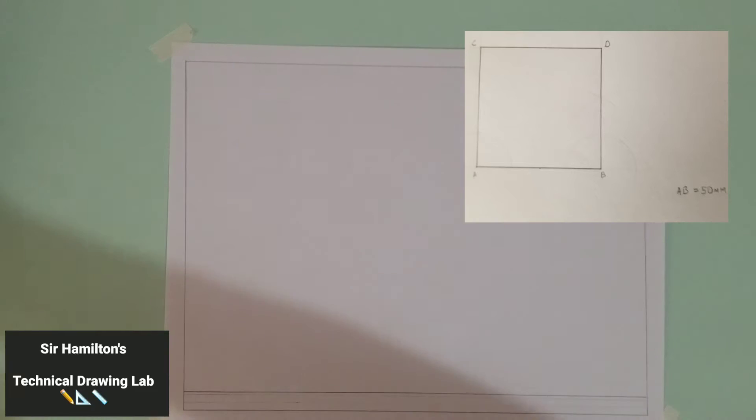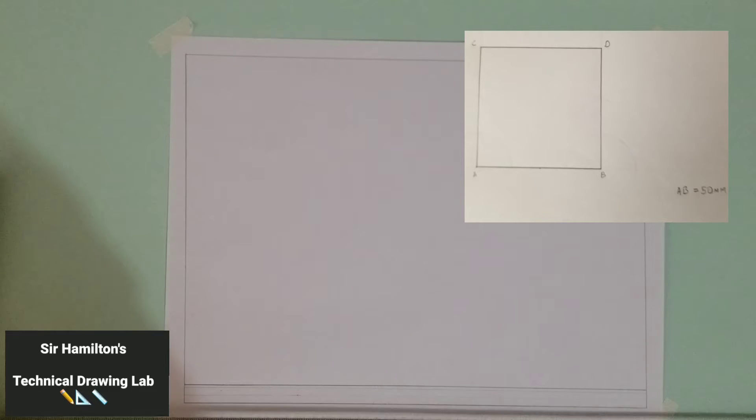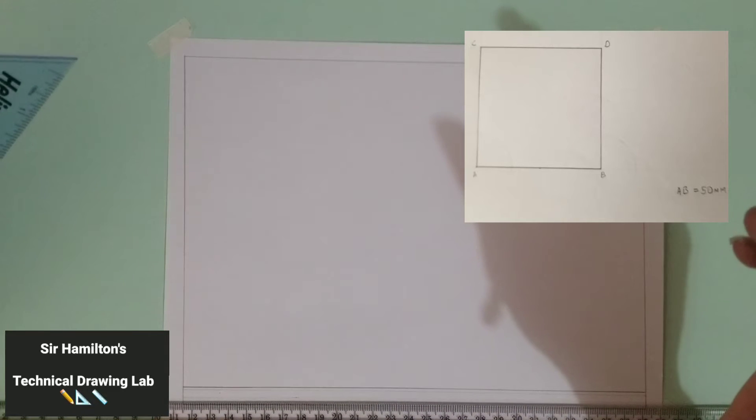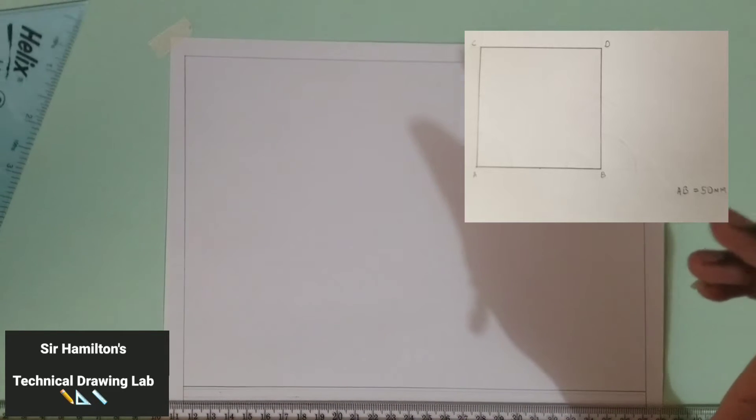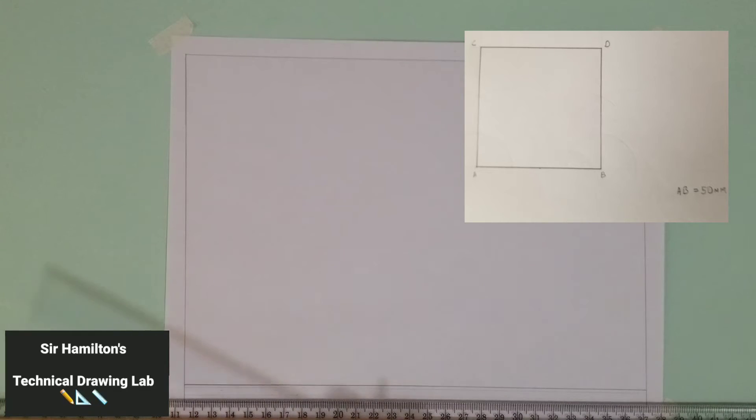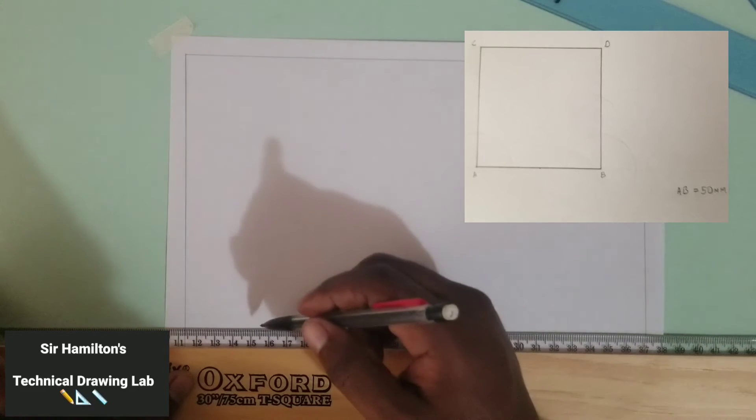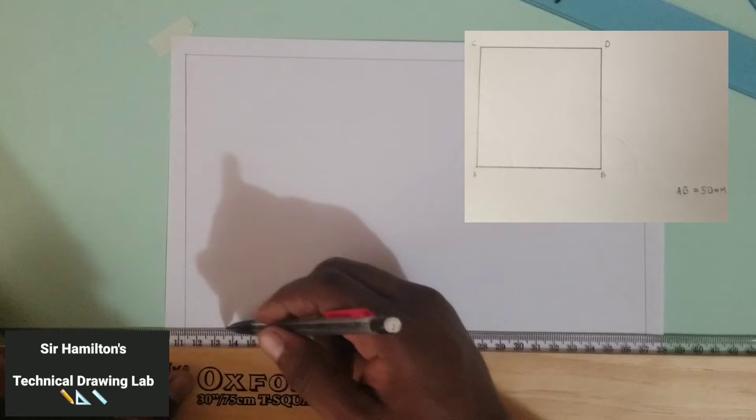Now as I said earlier, what we will be drawing today is a square, and that is one of the simplest forms of quadrilaterals. For today's square, the side that is given is 50 millimeters. So we'll be working with a first given side of 50 millimeters. Let me just go right ahead and mark our starting line.